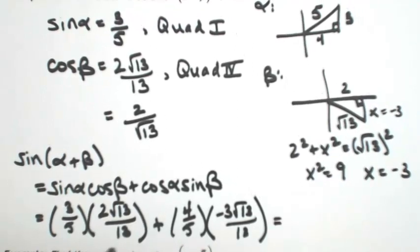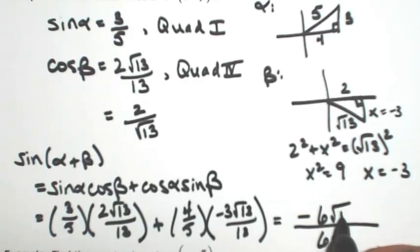Okay, so multiplying this out, the common denominator would be 65. So I'm going to end up with 6 root 13 minus 12 root 13. So this is going to be minus 6 root 13 over 65.